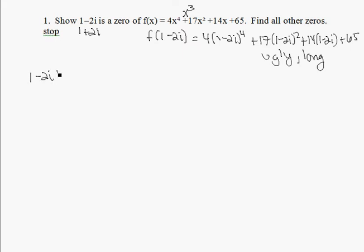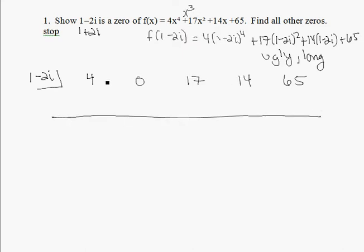So 1 minus 2i, and we do 4, 0, 17, 14, and 65. With synthetic division, we bring the 4 down. We multiply 4 times this, which is 4 minus 8i. I add it to 0, I get 4 minus 8i. And then I have to multiply 1 minus 2i times 4 minus 8i. And I honestly don't really feel like doing that, so I'm going to use the graphing calculator instead.